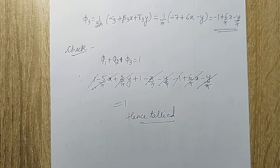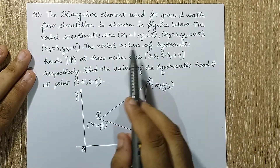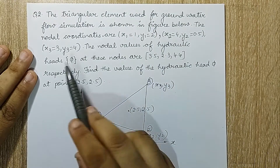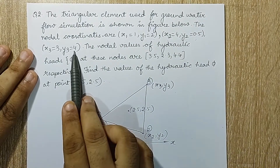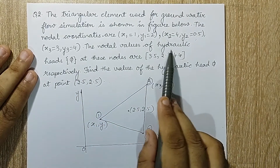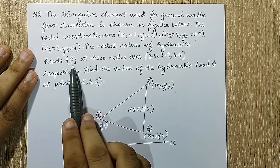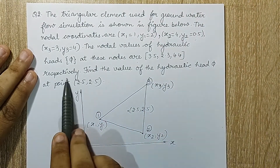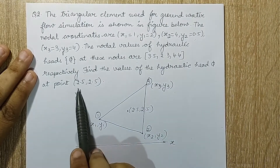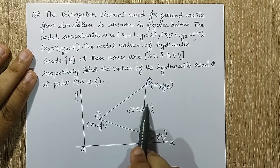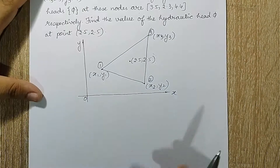Now let's go to numerical 2. The triangular element used for groundwater flow simulation is shown in the figure. The nodal coordinates x1,y1; x2,y2; x3,y3 are given, along with nodal values of hydraulic head phi at these nodes. Find the value of the hydraulic head phi at the point 2.5 comma 2.5.